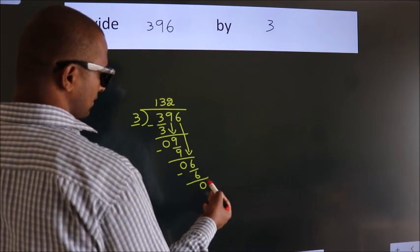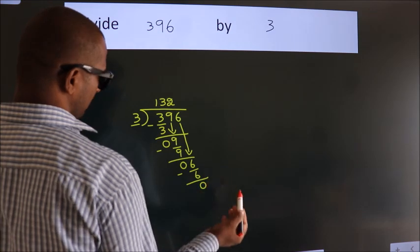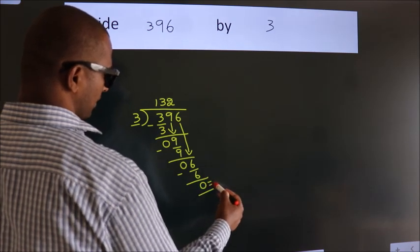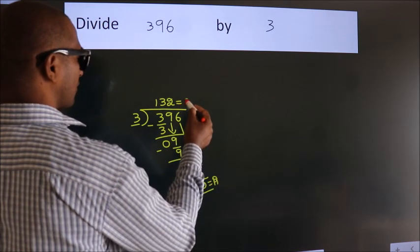After this, no more numbers to bring it down. So we stop here. This is our remainder. This is our quotient.